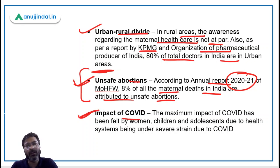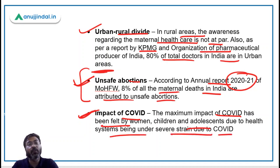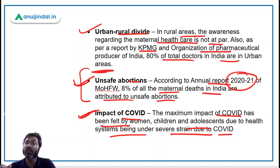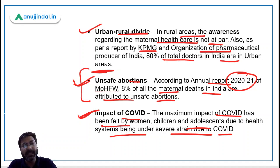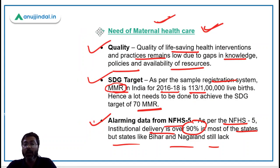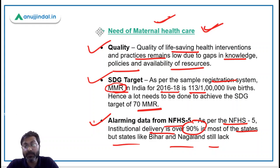The impact of COVID-19 must also be mentioned. The maximum impact of COVID has been felt by women, children, and adolescents due to the health system being under severe strain. Because the health system was overloaded due to COVID-19, the maternal healthcare sector was significantly affected. These are some of the needs for having more sound and adequate healthcare policies in the maternal and geriatric healthcare sectors.